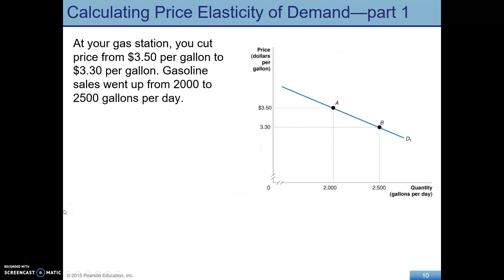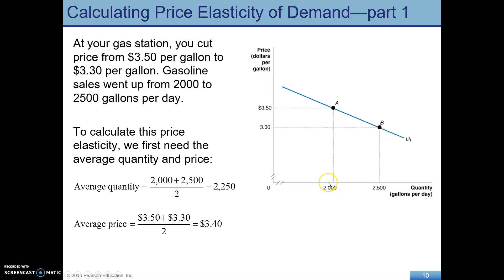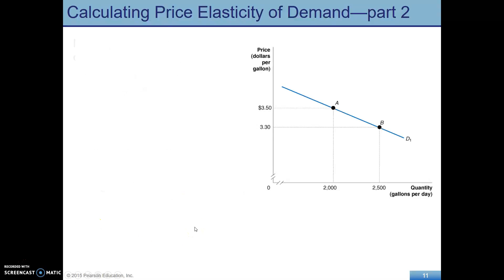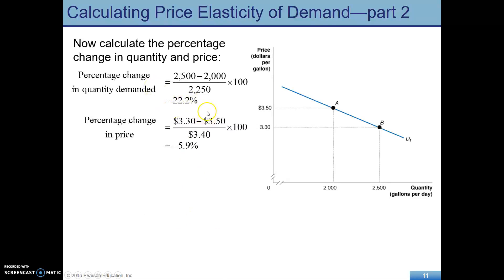Here's an example of a calculation using the midpoint formula. Imagine you have a gas station and you decide to cut prices on gasoline per gallon from $3.50 to $3.30, and then you observe that quantity demanded went up from 2,000 to 2,500. To start, let's calculate the averages — we're going to use the average for the midpoint formula. Write out average quantity: add them up and divide by 2. Then calculate average price. Now do new minus old: for quantity demanded on top, that's 2,500 minus 2,000 over the average times 100.